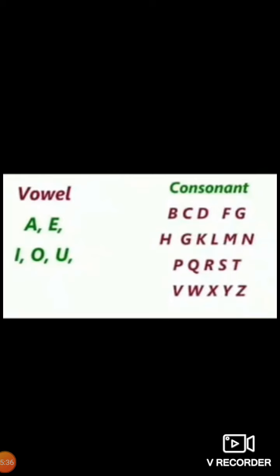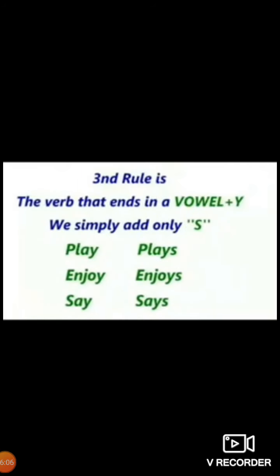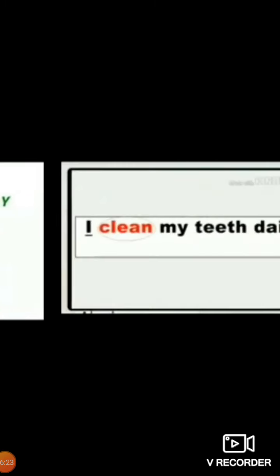Now let's look at the difference between vowel and consonant when forming verbs. A verb ending in consonant + Y: remove the Y and add IES. For example: marry, carry, study, worry — these end in Y with consonant sounds R, R, D, R before the Y, so IES is added. A verb ending in vowel + Y: simply add S. For example: play, enjoy, say — before the Y we have vowel sounds, so only S is added and Y is not removed.